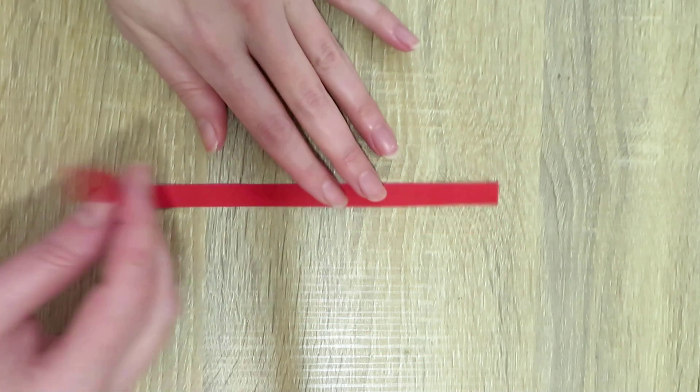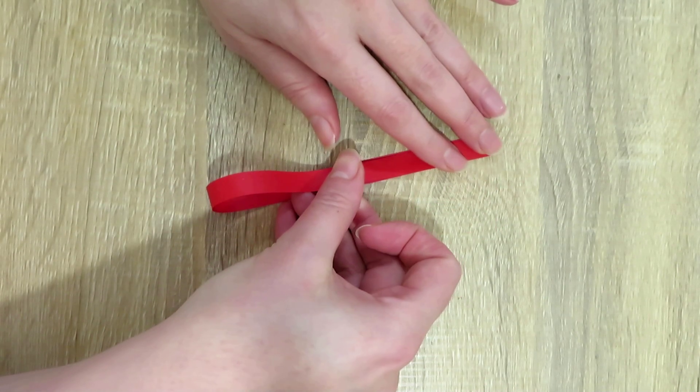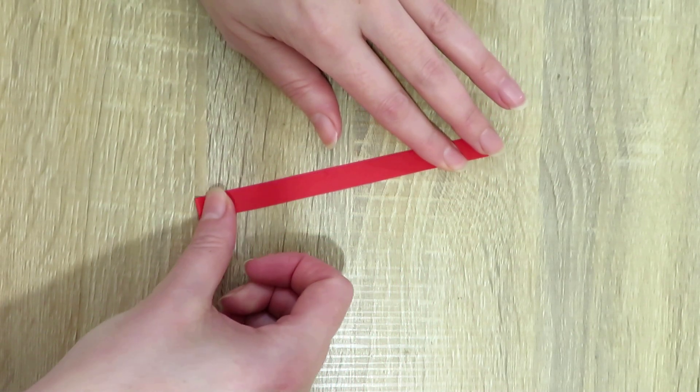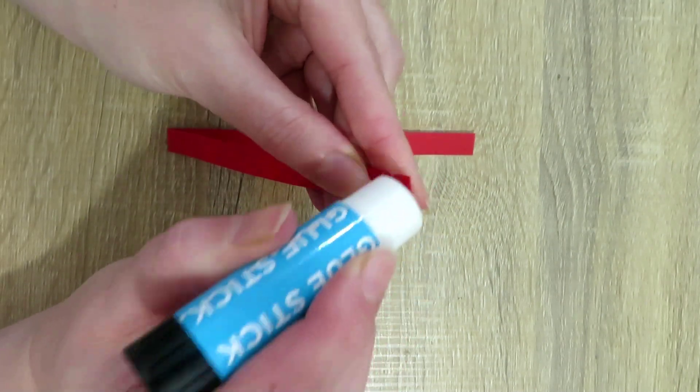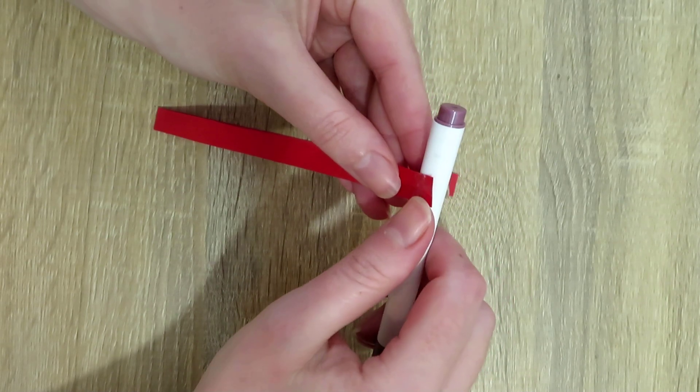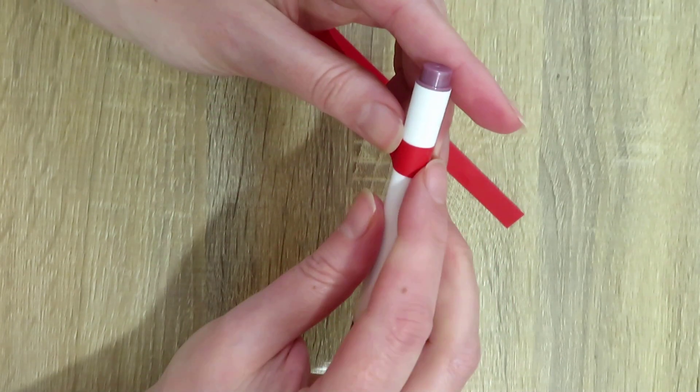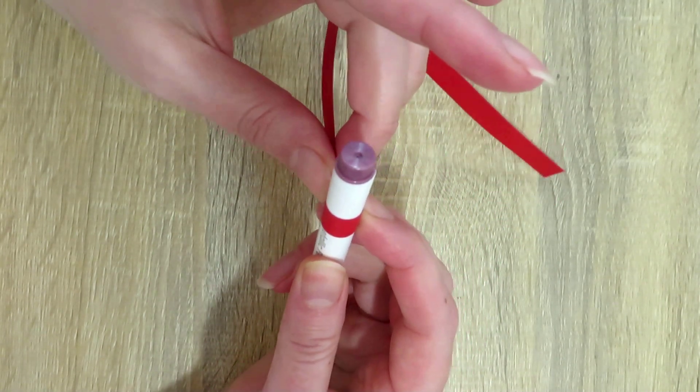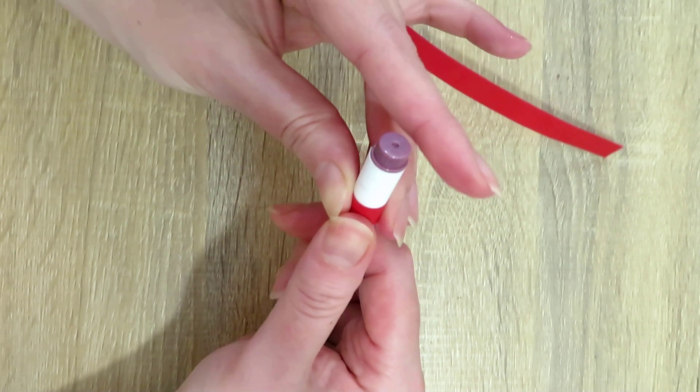Fold each strip of paper in half. Apply a little bit of glue at the end of the paper strip. Roll the end of the paper around a round object, such as a pen. Press on the point where the glue is, and let the glue set.